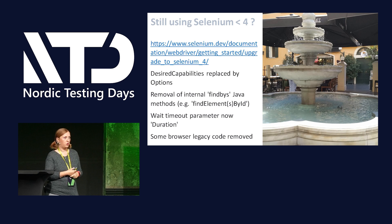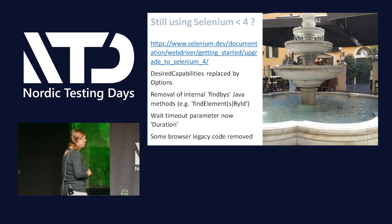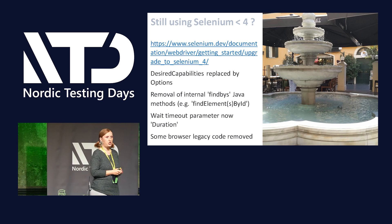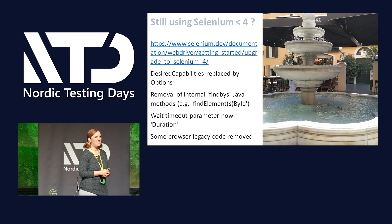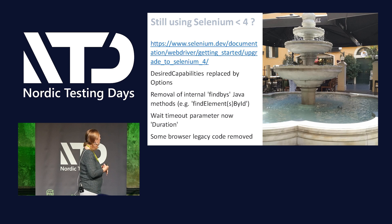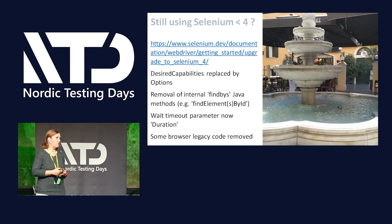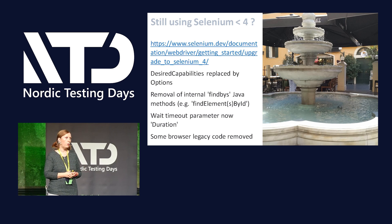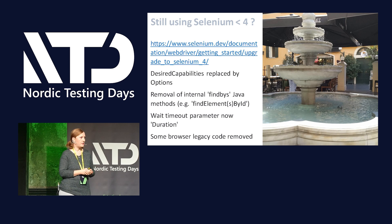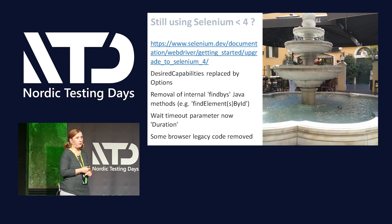That was a long time ago when that version was released. If you are still using an older version, I encourage you to upgrade to the latest one. The move from Selenium 3 to 4 isn't that complicated. There is a dedicated page that tells you exactly what you need to change. For example, the so-called desired capabilities have been replaced by options — Chrome options, Firefox options, and so on. Some internal methods that were exposed have also been removed.